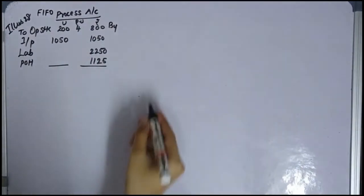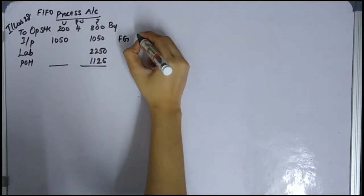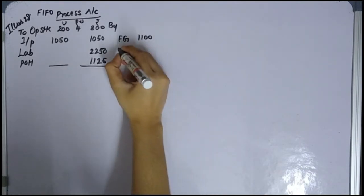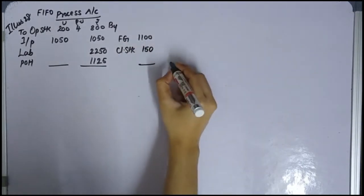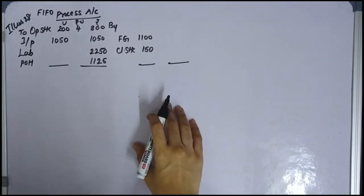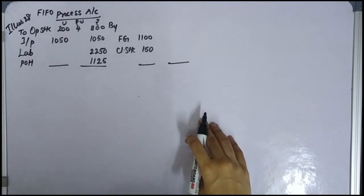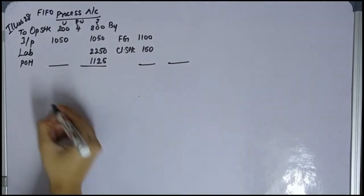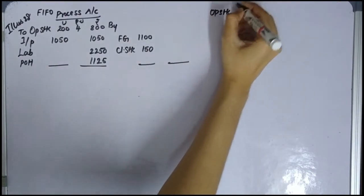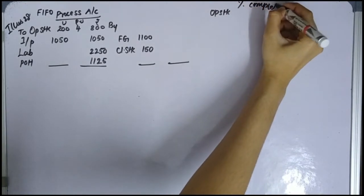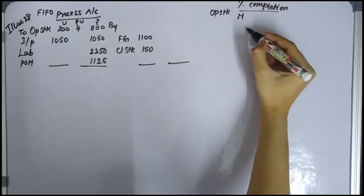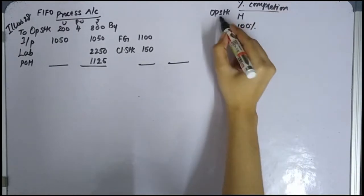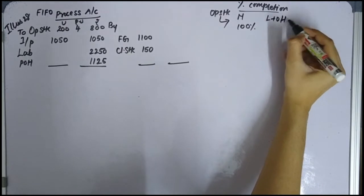On the credit side: transfer to next process is 1100 units of finished goods. Closing stock is 150 units. Stage of completion for opening work-in-progress: material is 100% complete, labor and overheads are 40% complete.